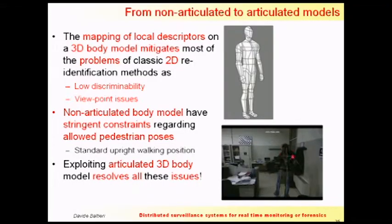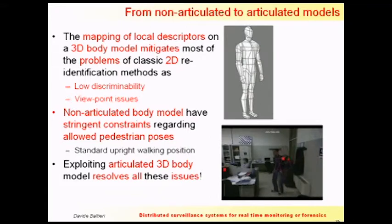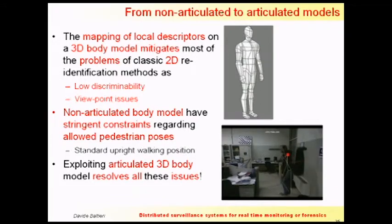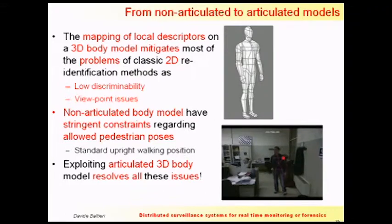From that, I had an idea for an improvement. SARC3D is a non-articulated model — it has no limbs. It requires the person to be in a very fixed pose, standing upright and walking upright. Instead, with Microsoft Kinect and these new devices, we can extract a skeleton for a person. So why not use this skeleton to map appearance features onto an articulated model?